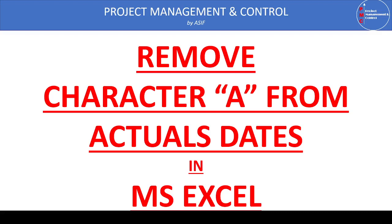Hello everyone and welcome to our channel Project Management and Control. In this video I'm demonstrating how we can remove the character 'A' from the start and finish columns in the Primavera P6 software. When we are updating the program in P6 and click on the start button, it shows an 'A' character in the start dates column for all activities that have started.